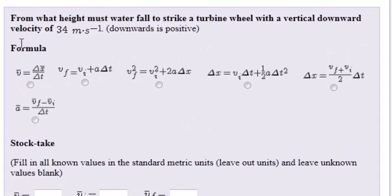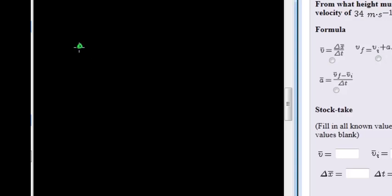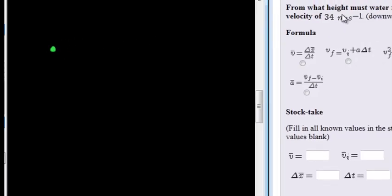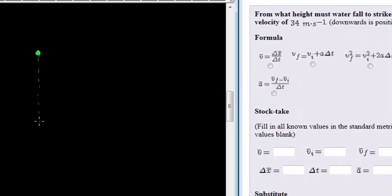From what height must water fall to strike a turbine wheel with a vertical downward velocity of 34 meters per second? It's important that we understand that this is only talking about a falling object. It doesn't matter what the turbine wheel is or whether it's water or whatever is falling. All it tells us is that there's a falling object and we want its final velocity to equal 34 meters per second.